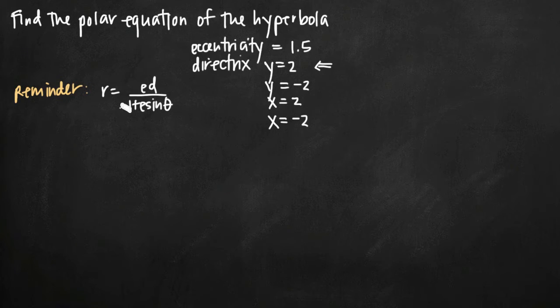But once you figure out the formula you need, then you're just plugging in the values for eccentricity and directrix. So in our case, we have r equals eccentricity of 1.5, so we'll get 1.5 times d, which in our case is 2, so times 2, divided by 1 plus 1.5 sine theta.